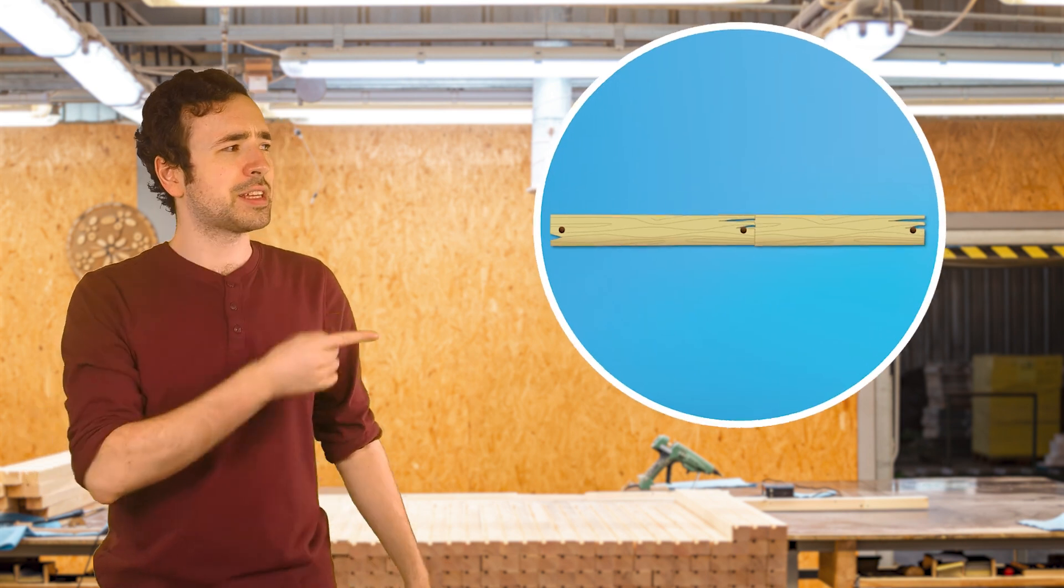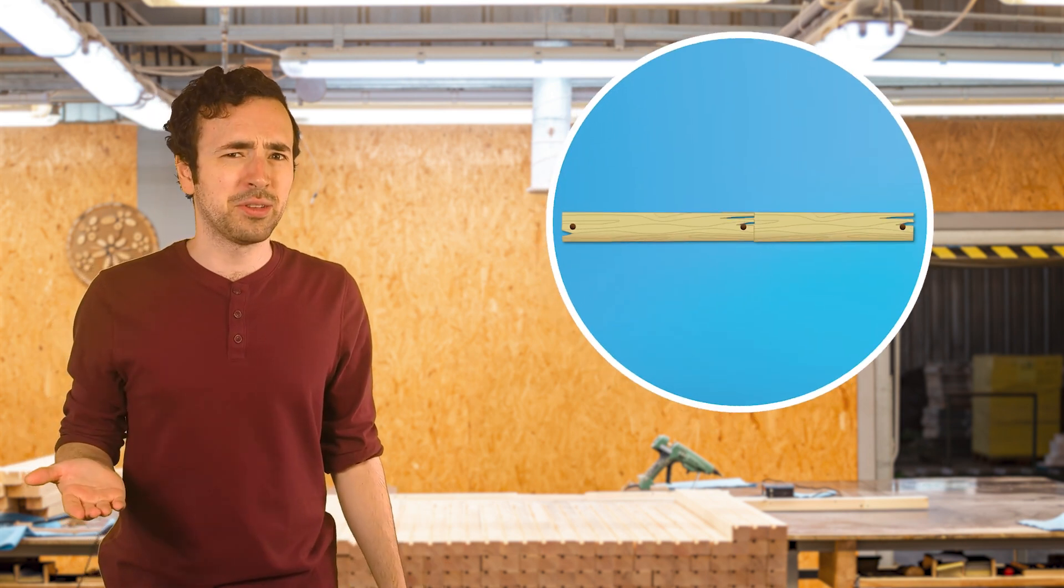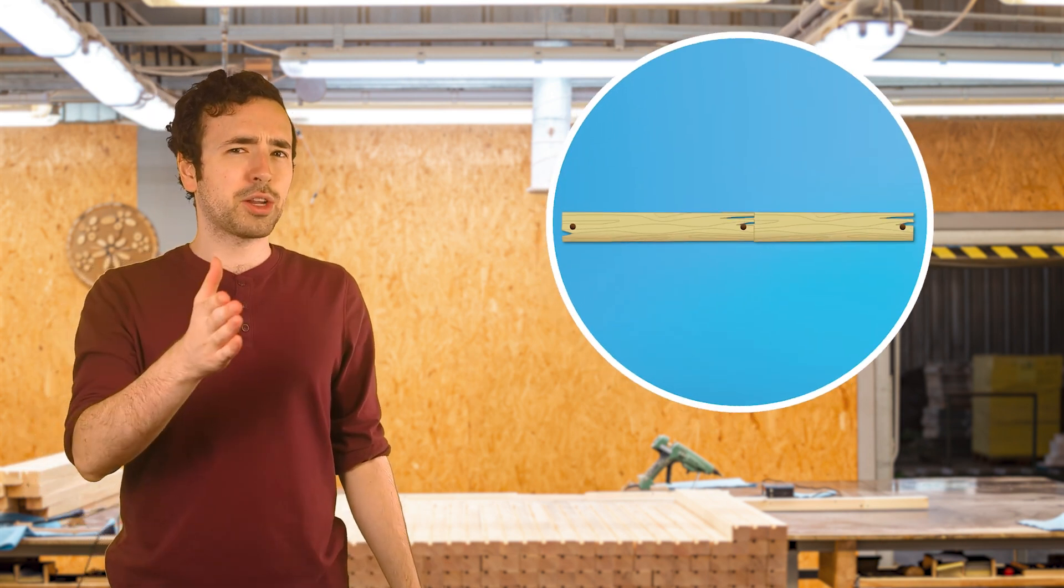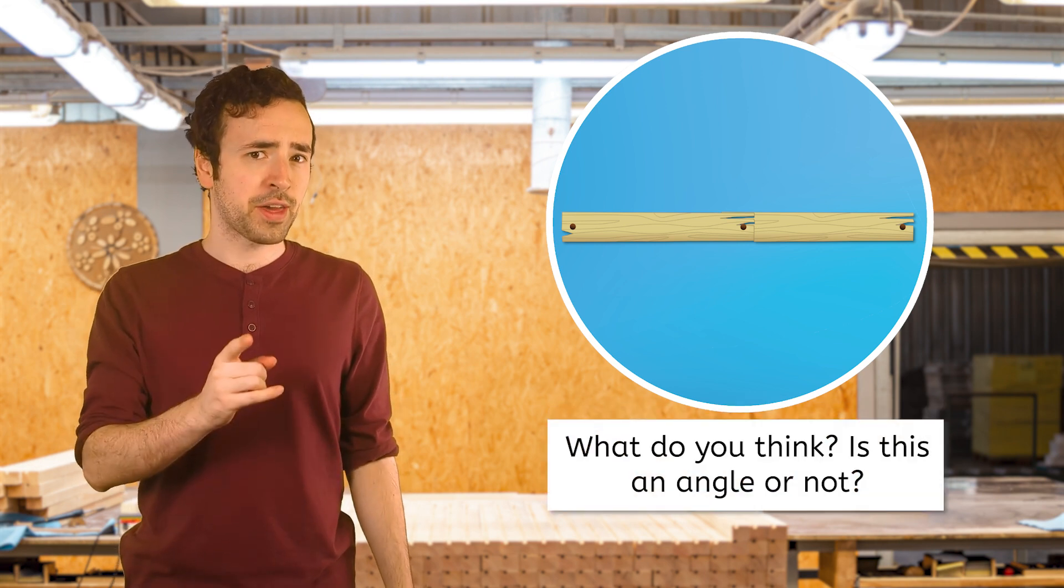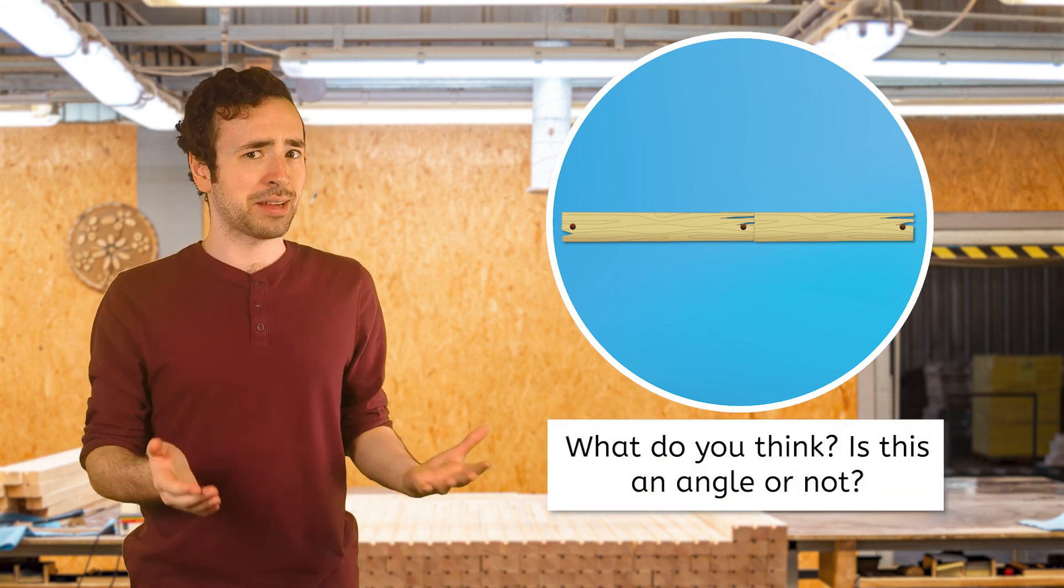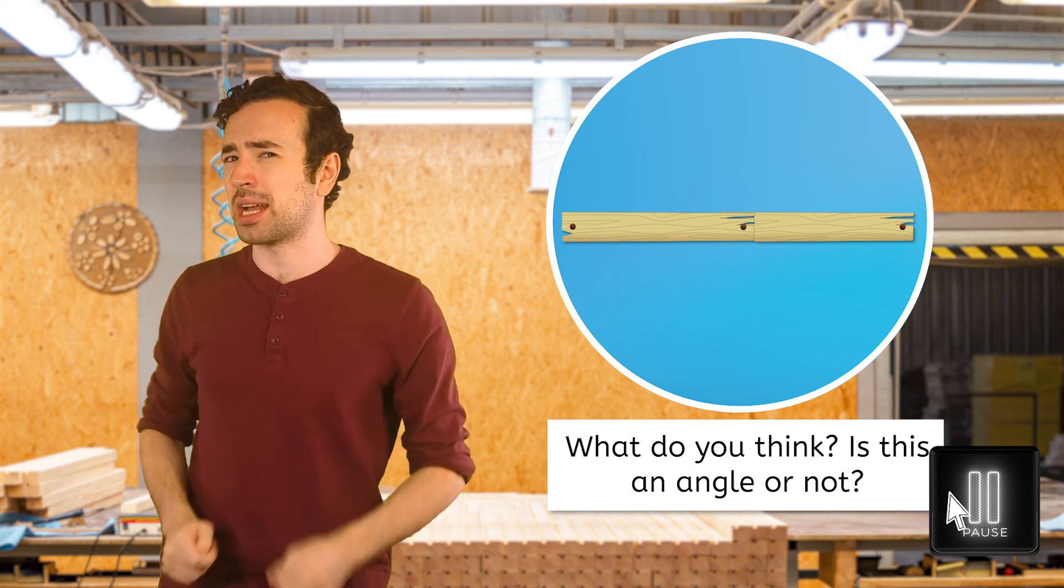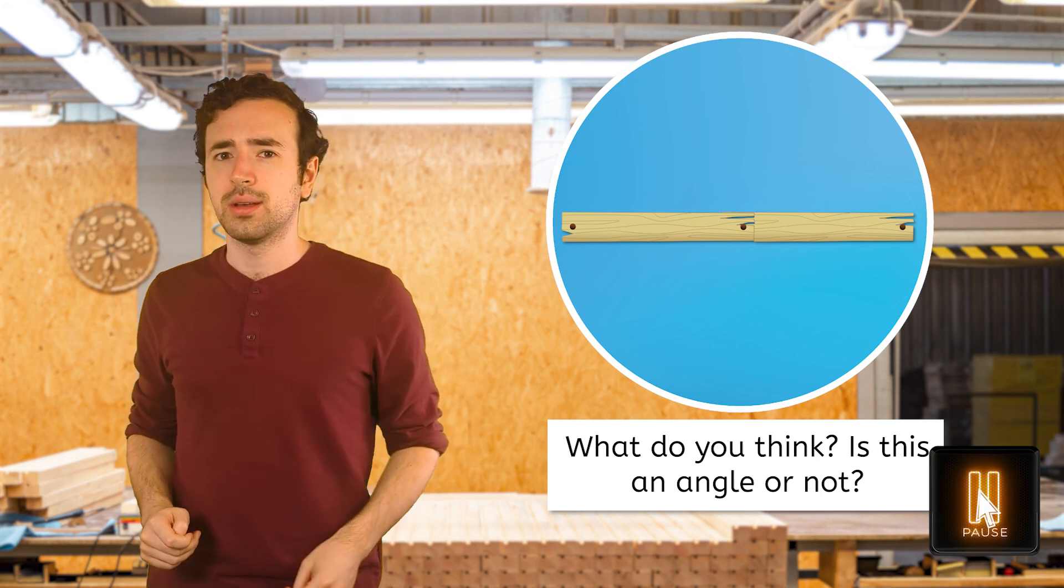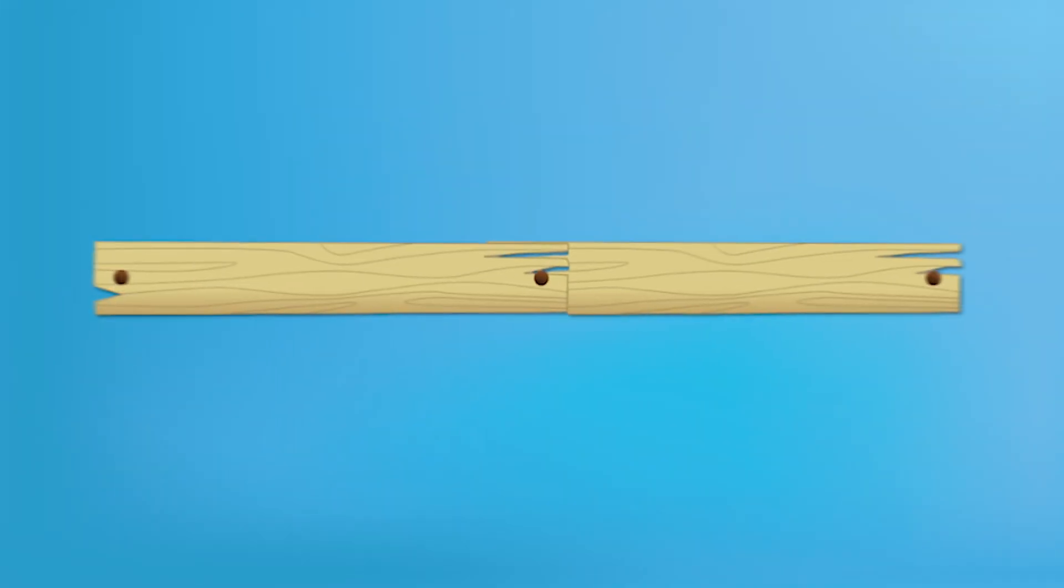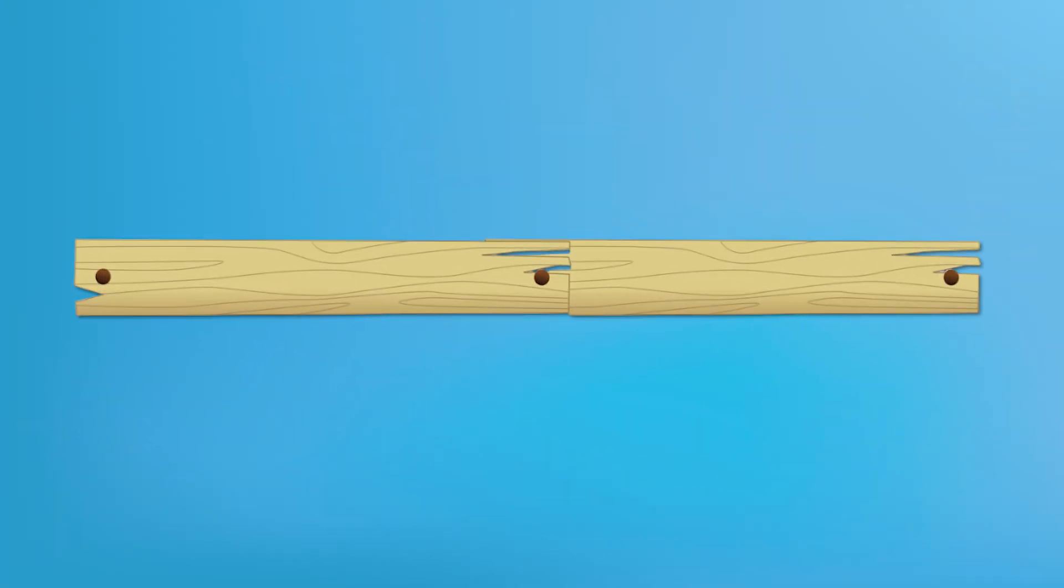How about this one? Wait a second, is this even an angle? Look back at our definition of the word angle from earlier. What do you think? Is this an angle or not? Share your answer and reason why in your guided notes. Well, at first glance, I'm thinking, no, it's not an angle. All the angles we saw before had two lines meeting at a place. This seems to just be one line not meeting anywhere. However, what if I showed you how this piece of wood was made? Take a look at this.